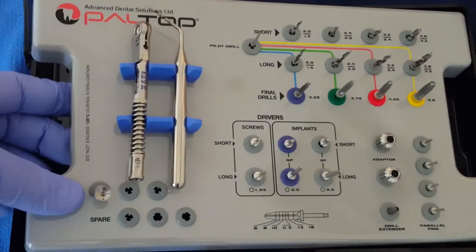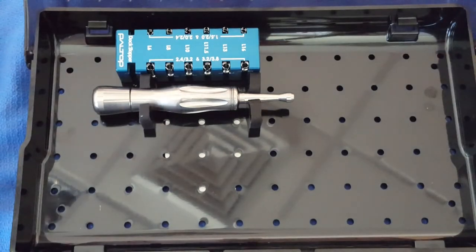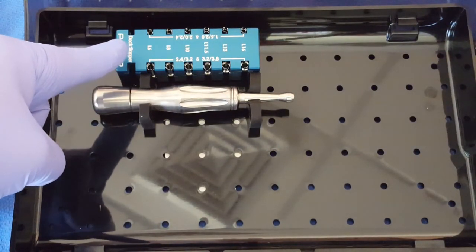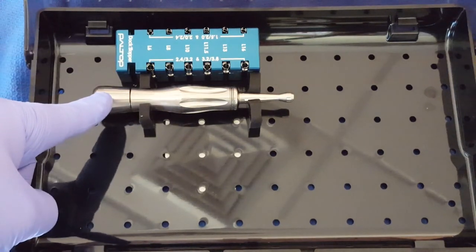Under the tray insert, there are two additional items. There is a drill stopper kit as well as a hand driver.